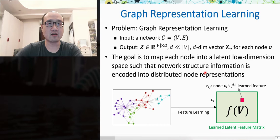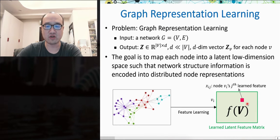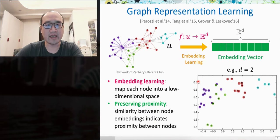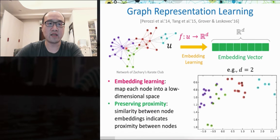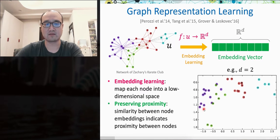The task of graph representation learning takes a graph as input and outputs a feature matrix where each node has a d-dimensional feature vector. We expect the representation vector of each node to encode the graph structure. This is also termed embedding learning. The main idea is to preserve proximity: we want the similarity between two nodes' embeddings to indicate the proximity between nodes. For example, nodes that share common neighbors should have similar embedding vectors in the embedding space.